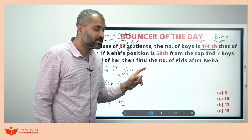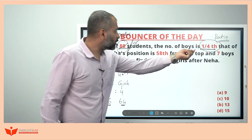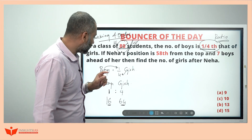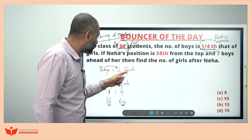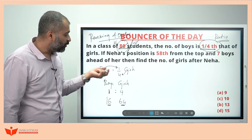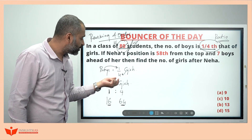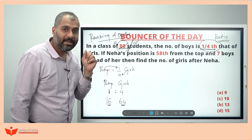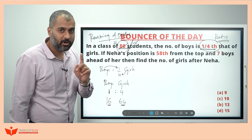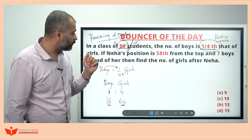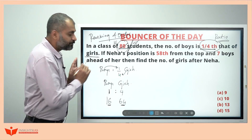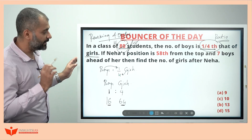Some of them will misinterpret this as one fourth of the total number — but this is not one fourth of the total; this is one fourth that of the girls. One fourth of the total number would be one fourth of eighty, which is twenty. Do not confuse one fourth of the total with one fourth of the girls. Here it is one fourth of the girls.